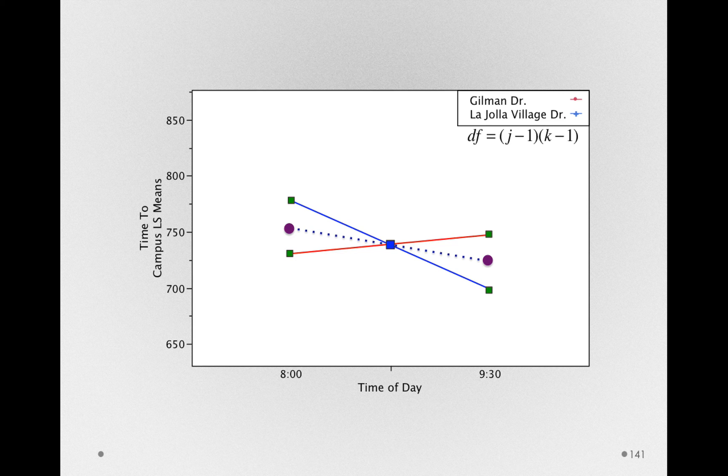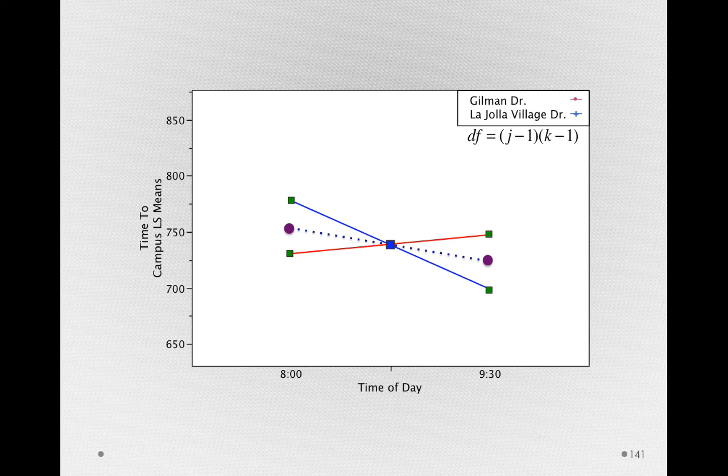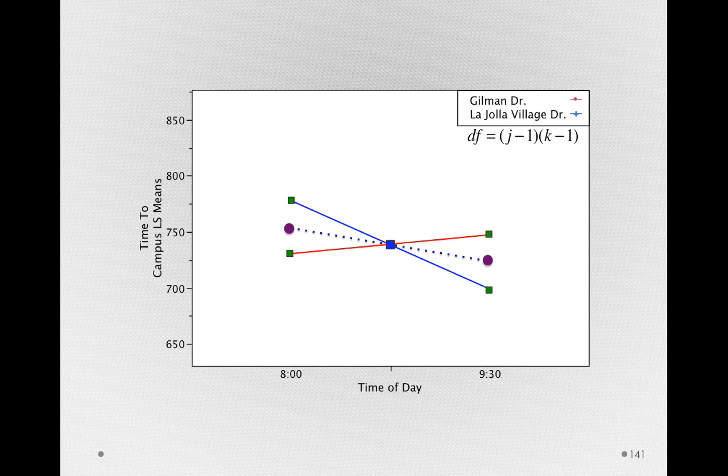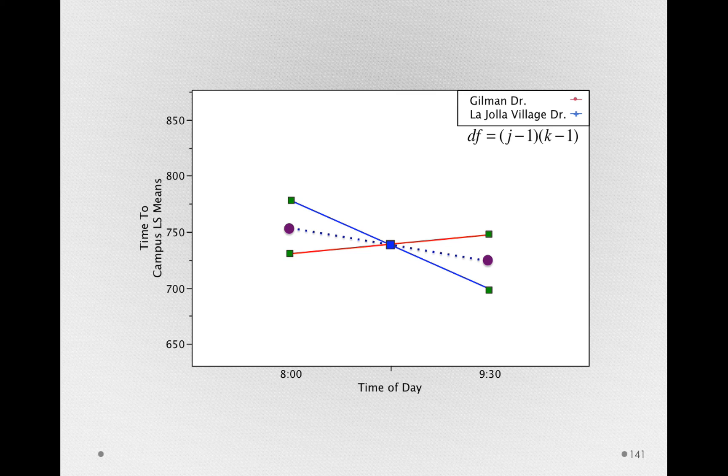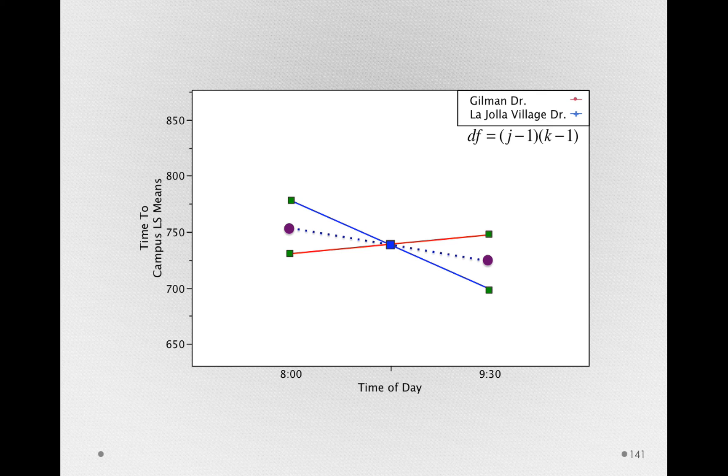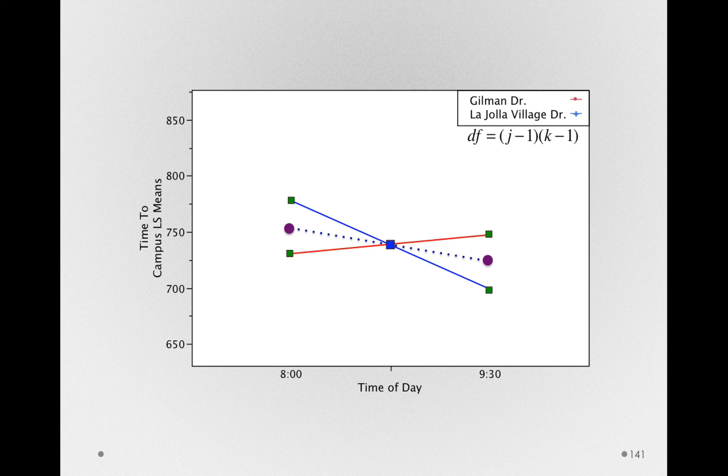In this case, we can see that really clearly with the graphical demonstration. The means have to pivot around means that our model already knows. But more generally, the degrees of freedom for an interaction will be j minus 1 times k minus 1. Or in other words, the number of levels for factor a, in this case we have 2, minus 1 times the number of levels for factor b minus 1. So in this case, 1 times 1 equals 1 degree of freedom.